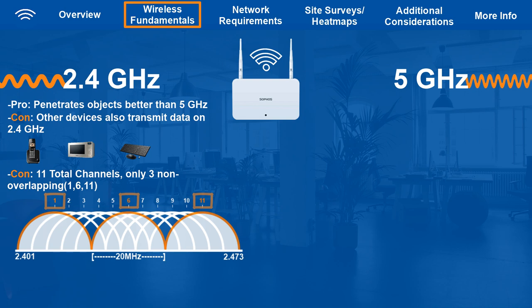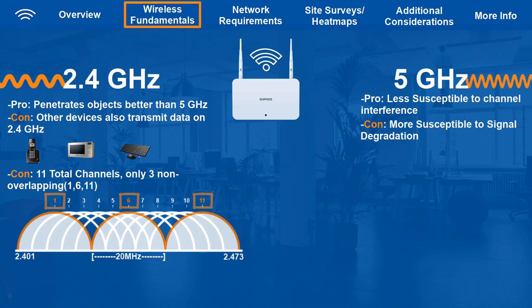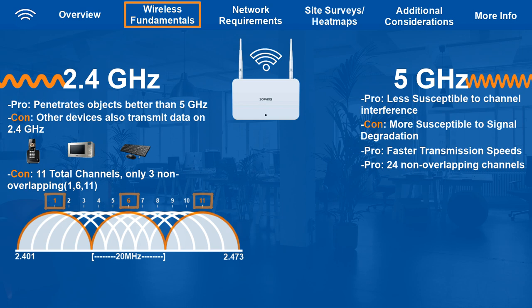Our other frequency band option is 5 GHz. 5 GHz is less susceptible to channel interference but more susceptible to signal degradation. It's a higher frequency, so its waveforms are smaller and faster than 2.4 GHz, making it more difficult to penetrate objects but with a faster transmission rate, meaning much faster potential speeds. 5 GHz has 24 non-overlapping channels, so its channels are less likely to get congested or interfere with each other if multiple APs are close together. Not all devices support 5 GHz, so make sure you evaluate your client device requirements and AP capabilities before selecting a band.